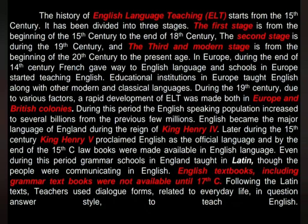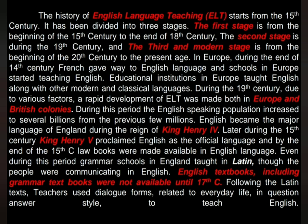During the 19th century, due to various factors, a rapid development of ELT was made both in Europe and British colonies. During this period, the English-speaking population increased to several billions from the previous few millions. English became the major language of England during the reign of King Henry IV. Later during the 15th century, King Henry V proclaimed English as the official language, and by the end of the 15th century, long books were made available in English. Even during this period, grammar schools in Europe taught in Latin, though the people were communicating in English. English textbooks including grammar textbooks were not available until the 17th century.